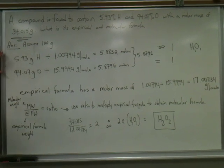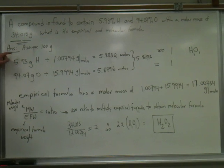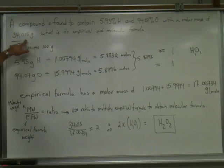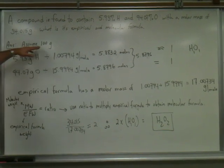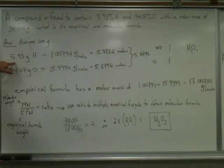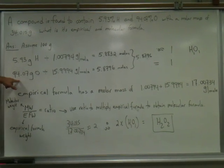We start by finding the empirical formula. These are the steps you need to find the empirical formula. You begin by assuming that you have 100 grams of the sample. If you have 100 grams of the sample, those percentages will give you the following proportions: 5.93 grams of hydrogen and 94.07 grams of oxygen.